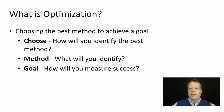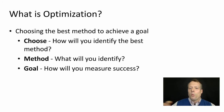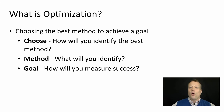The three components are: Choose — how will you identify the best method, like what is the way you're going to choose? Method — what will you identify, what do we mean by method or means in this context? And then Goal — how will you measure success? We're going to go through each of those in turn.